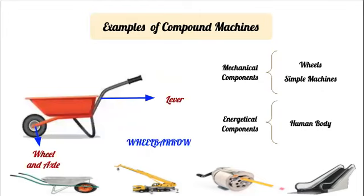Another compound machine is a wheelbarrow. A wheelbarrow is made up of at least two simple machines: the lever and the wheel and axle. The lever amplifies the force to lift a heavy amount of gravel or cement, and the wheel and axle helps with moving the whole machine without much effort. The energetical component will be, once again, the human body, while the mechanical components include the wheels and, in general, the two or three simple machines together.